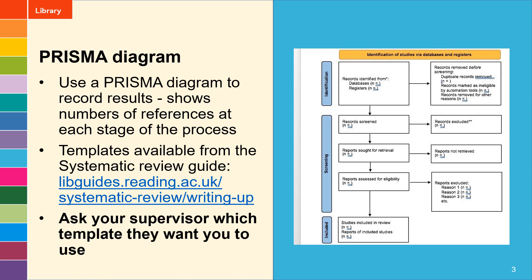You should then be left with a total number of reports. In the bottom box there are two sections: the reports of included studies would be the number of references left in your final selection group in EndNote. The studies included in review may be the same as the number of reports, or might be higher or lower. You may have an article which describes multiple different studies, so the number of reports would be lower than the number of studies. Alternatively, you might have several articles describing one study, in which case your number of studies would be lower than the number of reports. Do ask your supervisor which version of the PRISMA diagram they want you to use.